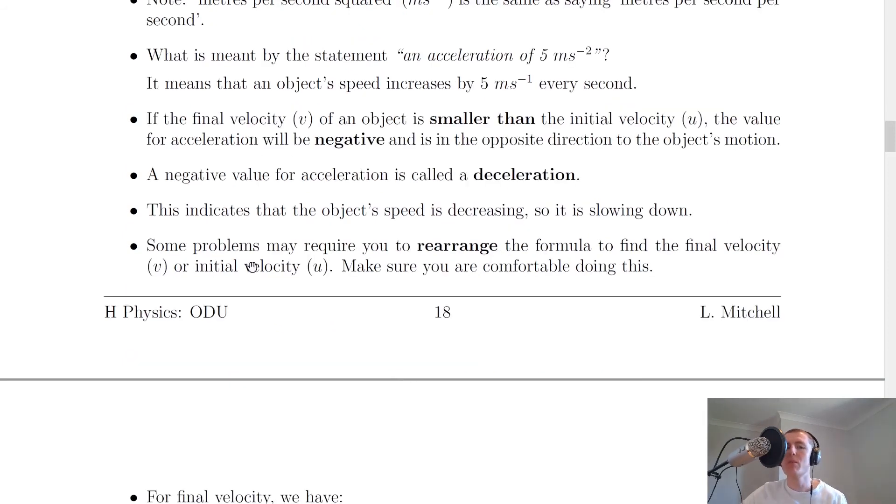It says here that some problems may require you to rearrange the formula of a equals v minus u over t to find the final velocity v or the initial velocity u. Make sure you're comfortable doing this either by rearranging the letters first or by plugging in your numbers first and then rearranging the numbers.